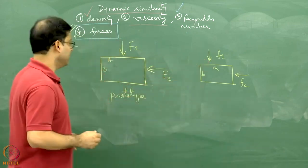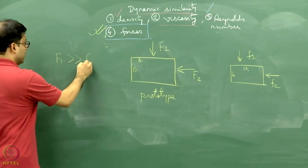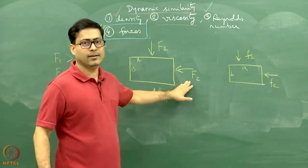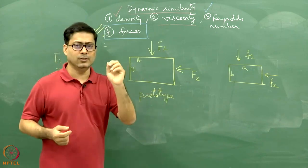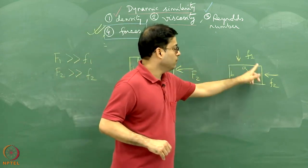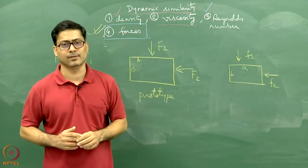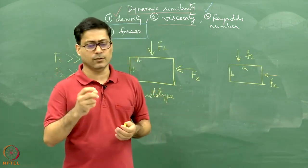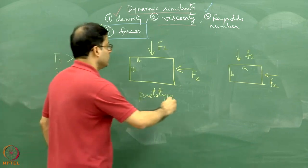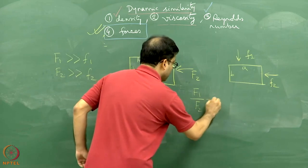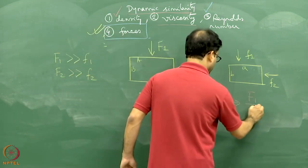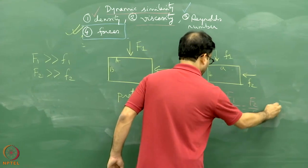So we apply a smaller force f1 and f2 in the model. Capital F1 is much more than small f1, and capital F2 is much more than small f2. There are direct and indirect means of knowing the magnitudes and directions of F1 and F2. In the laboratory, small f1 and f2 can be manipulated and measured. While we have no control over capital F1 and F2, we have one key condition to maintain.